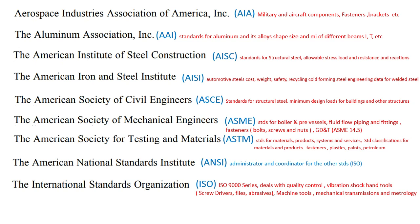Here is a summary of all the standards with respect to their applications. AIA — Aerospace Industries Association of America — covers military and aircraft components, fasteners, and brackets used in aircraft. The Aluminum Association covers standards for aluminum and its alloys, including shapes, beams — I-beams, D-beams — and related profiles. AISC — American Institute of Steel Construction — covers structural steel standards including allowable stress, load and resistance, and reactions.